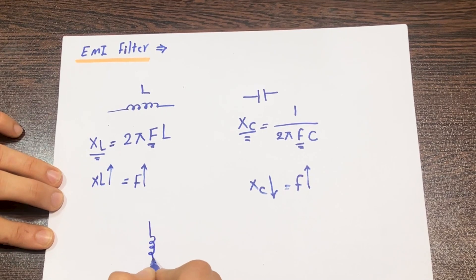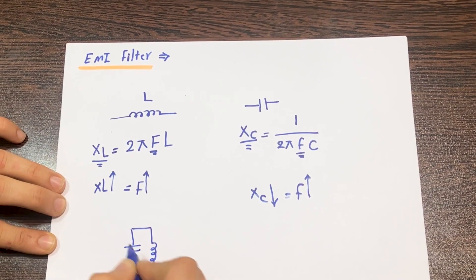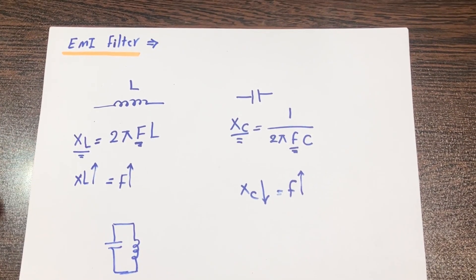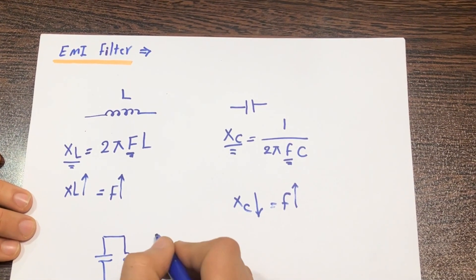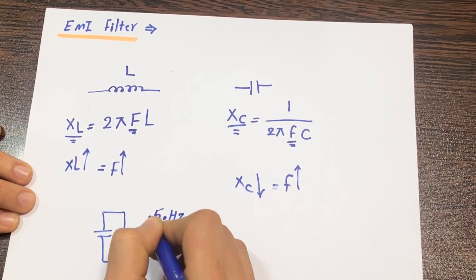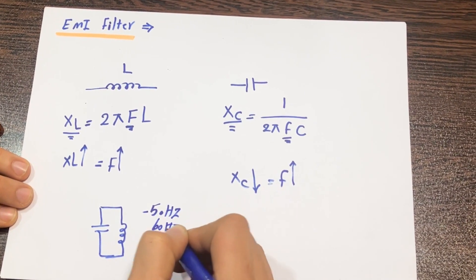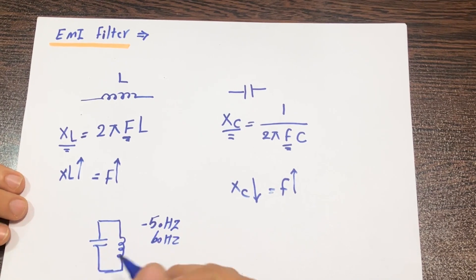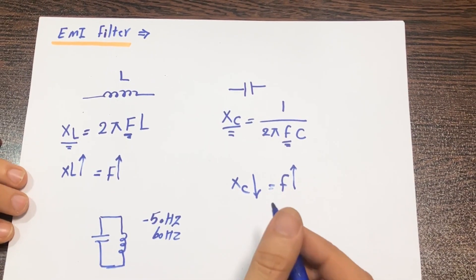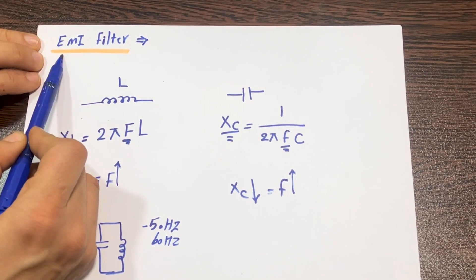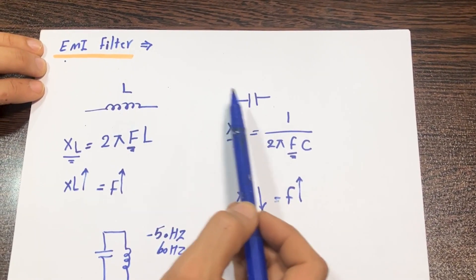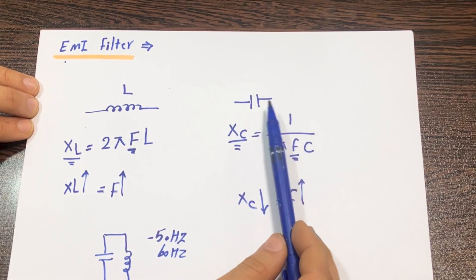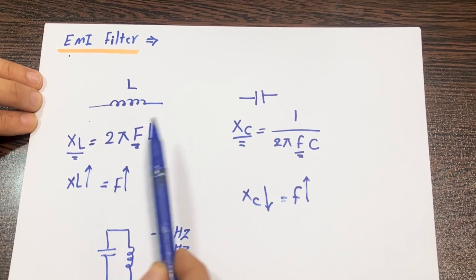The LC filter allows us to pass a specific frequency. As you know, the frequency of power lines is between 50 and 60 Hz. If we design the filter based on the power line frequency, we can remove all kinds of noise. Let me go to the slides and explain the structure of the EMI filter and how each component works in this type of filter.